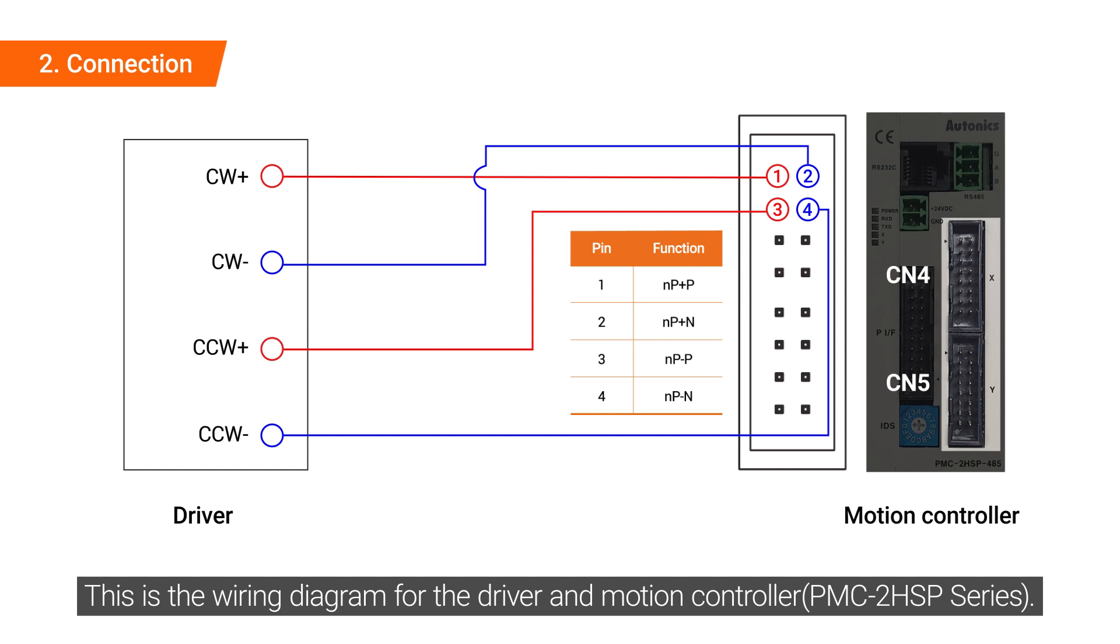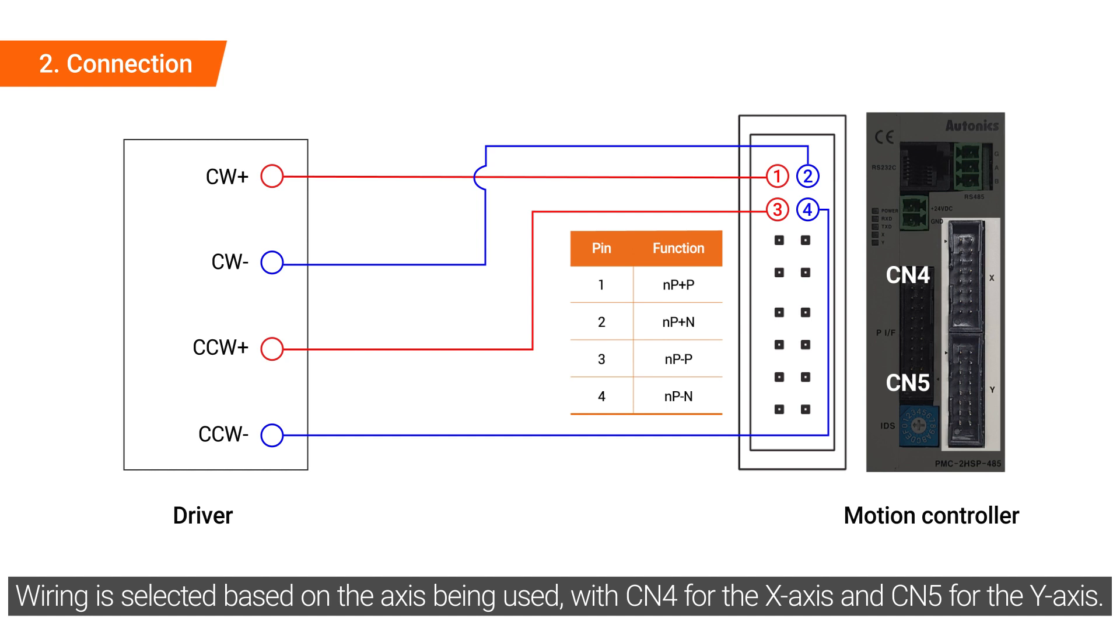This is the wiring diagram for the driver and motion controller. Wiring is selected based on the axis being used, with CN4 for the X axis and CN5 for the Y axis.